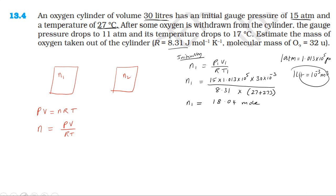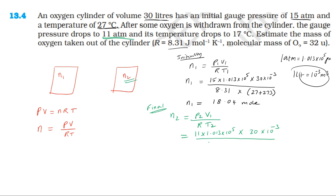For the final case, the pressure drops to 11 atm, so 11 into 1.013 into 10 power 5, volume remains 30 liters (30 into 10 power minus 3 meter cube), and temperature is 17 degrees centigrade, which is 17 plus 273 Kelvin. The final number of moles n2 is approximately 13.686 moles.